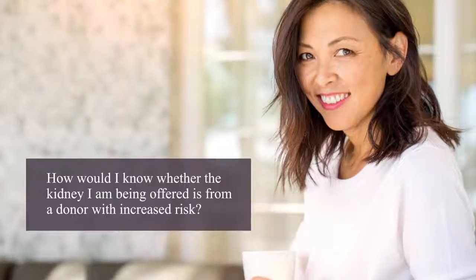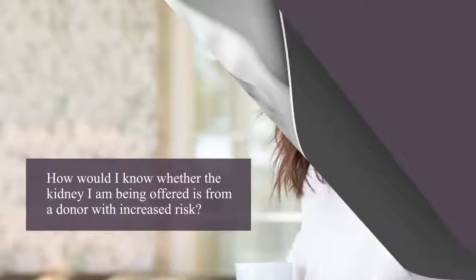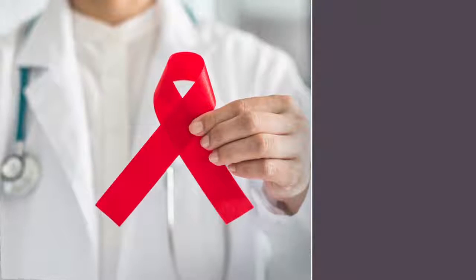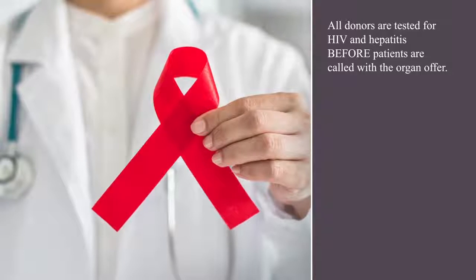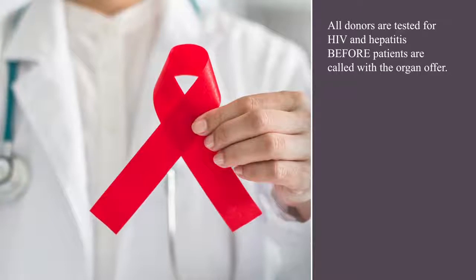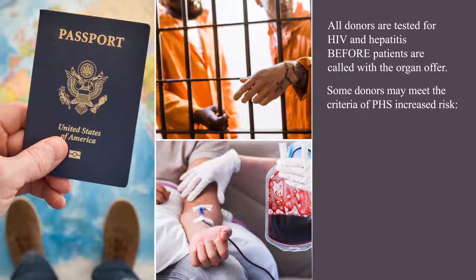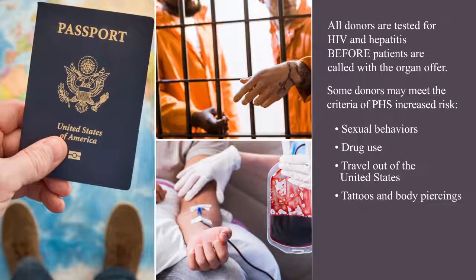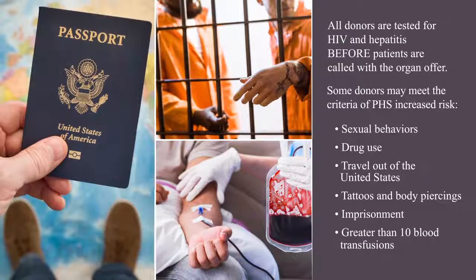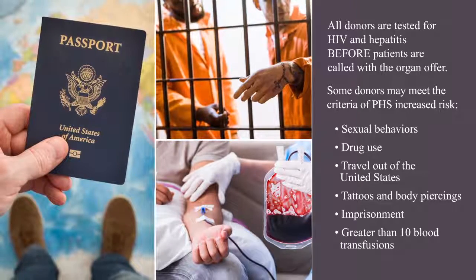How would I know whether the kidney I'm being offered is from a donor with increased risk? All donors are tested for HIV and hepatitis before you are called with the organ offer. However, some donors may meet the criteria of the public health services as increased risk for sexual behaviors, drug use, travel out of the United States, tattoos and body piercings, imprisonment, or greater than 10 blood transfusions. You will be told if kidneys are coming from a donor with increased risk, and you will have the right to accept or not accept the offer.